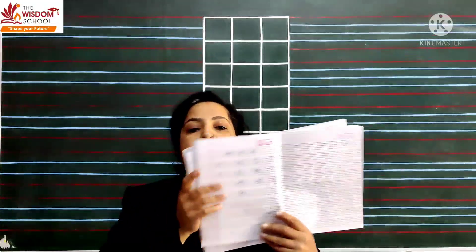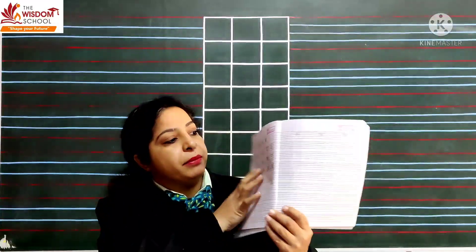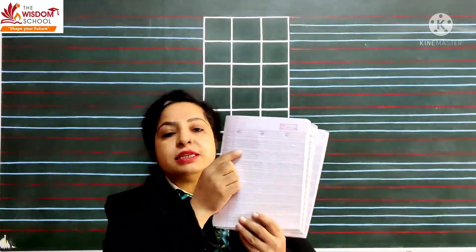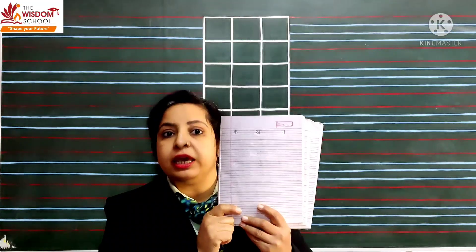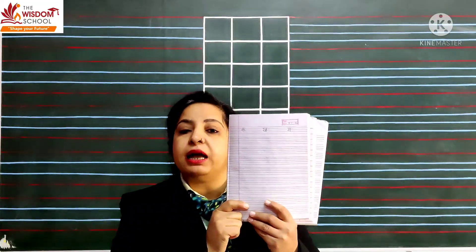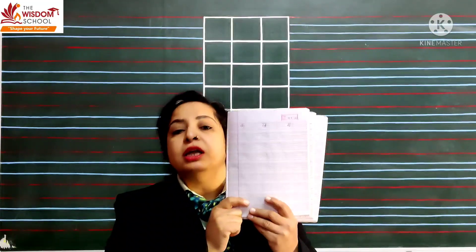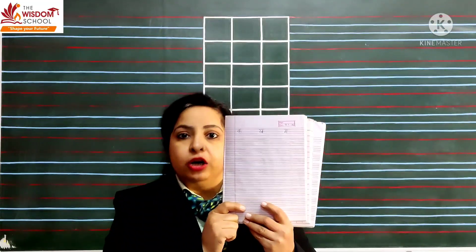Toh, English me haam ne kya karna hai, bachche? Letter A, B, C. And, Hindi me haam ne kya karna hai, bachche? Hindi me haam ne karna hai, bachche? Aaj, haam ne sirf teen vyanjan hi karne hai, ka, kh, aur ga. Toh, parents, bilkul isi ke according, jo jo vyanjan hamne karne hai, ka, kh, aur ga. Uske according ka, bachche ko dots laga kar do, taaki bachche ko problem na ho. Okay?